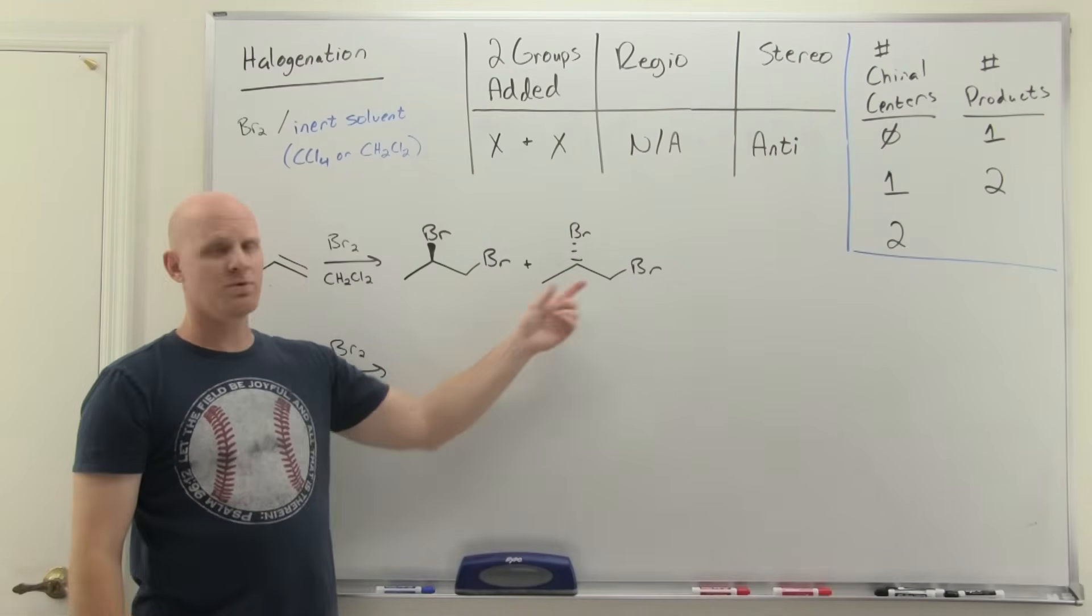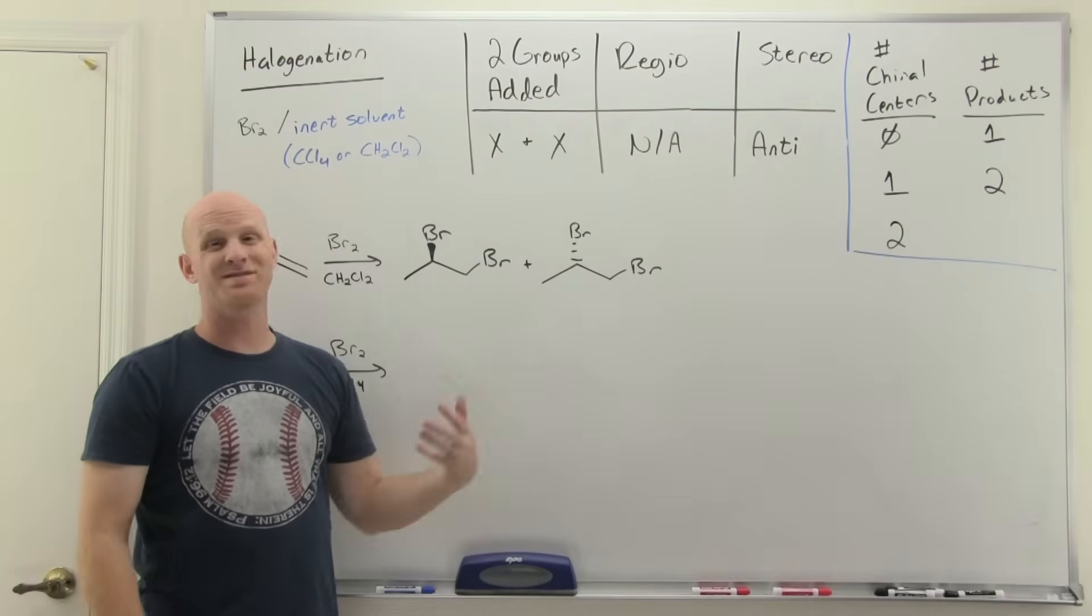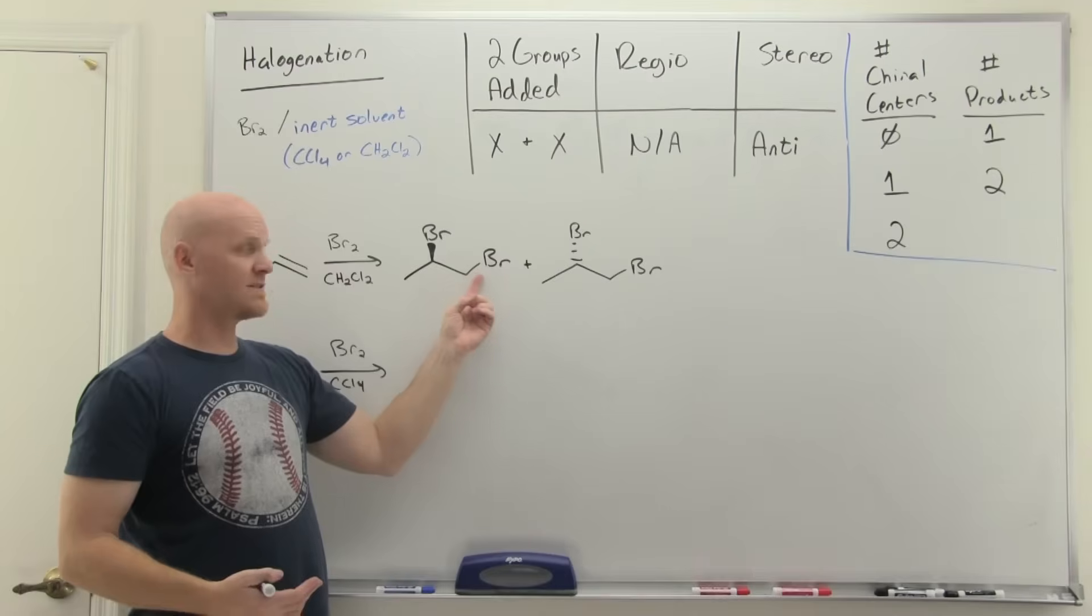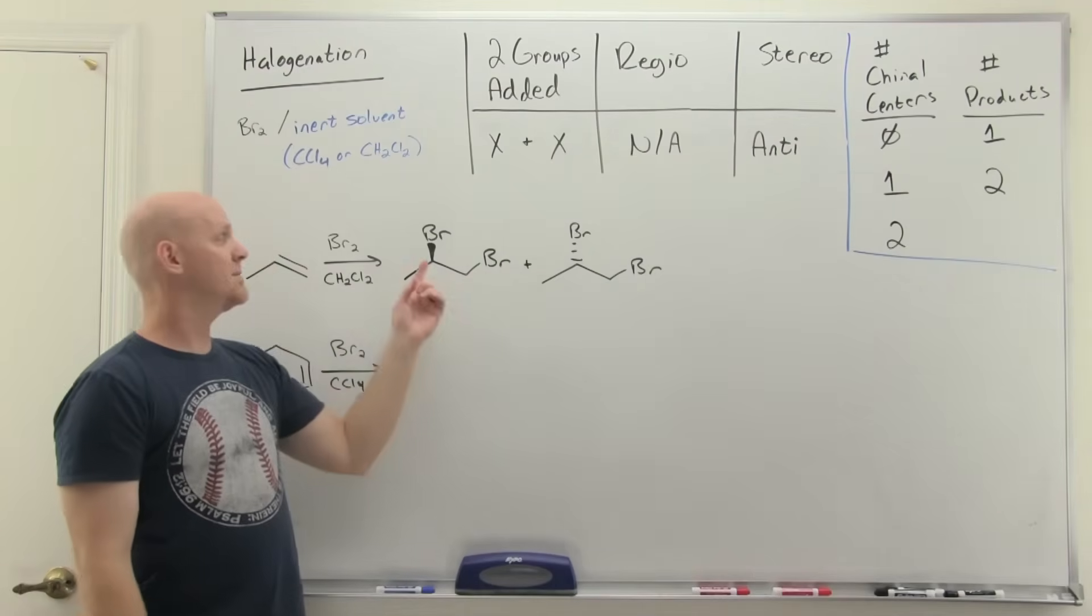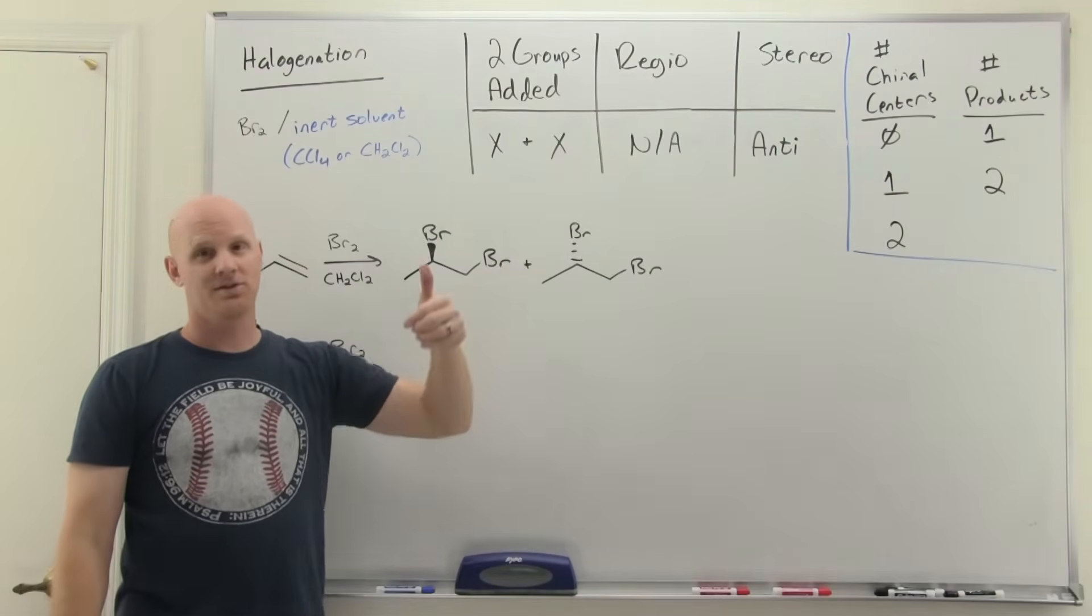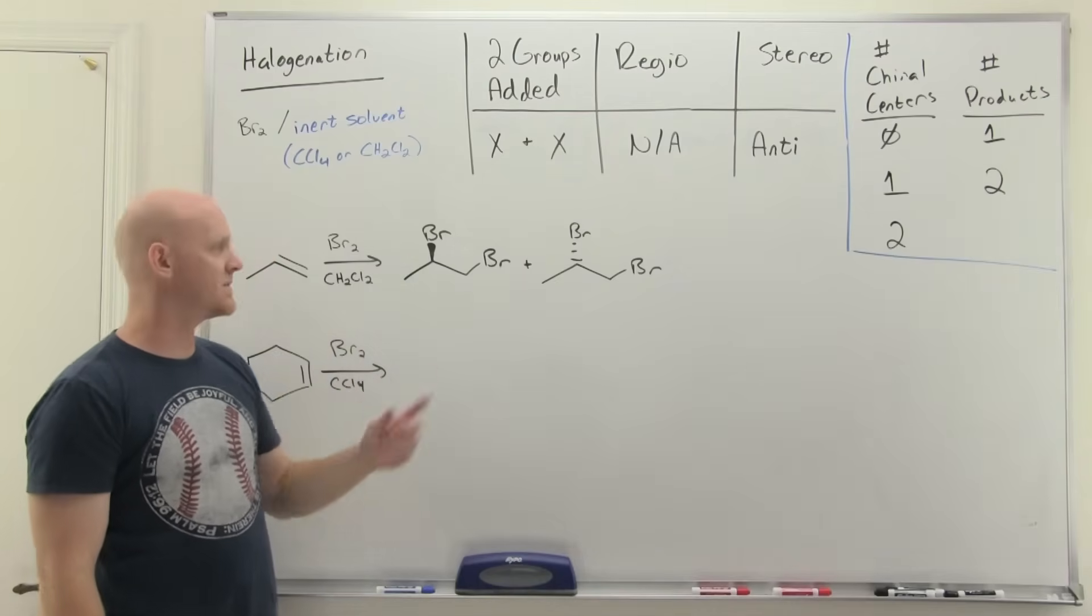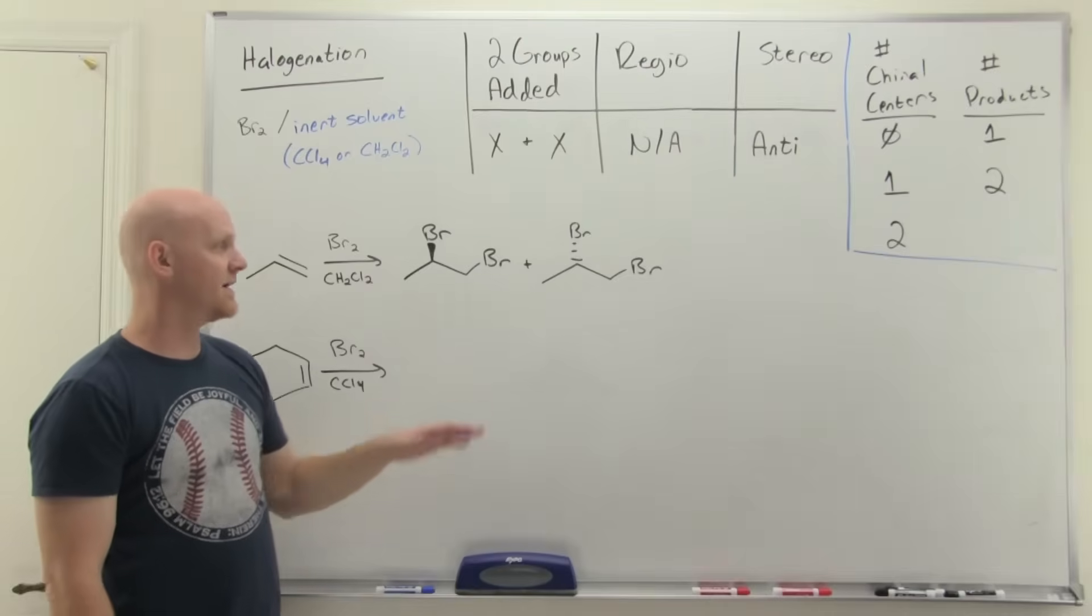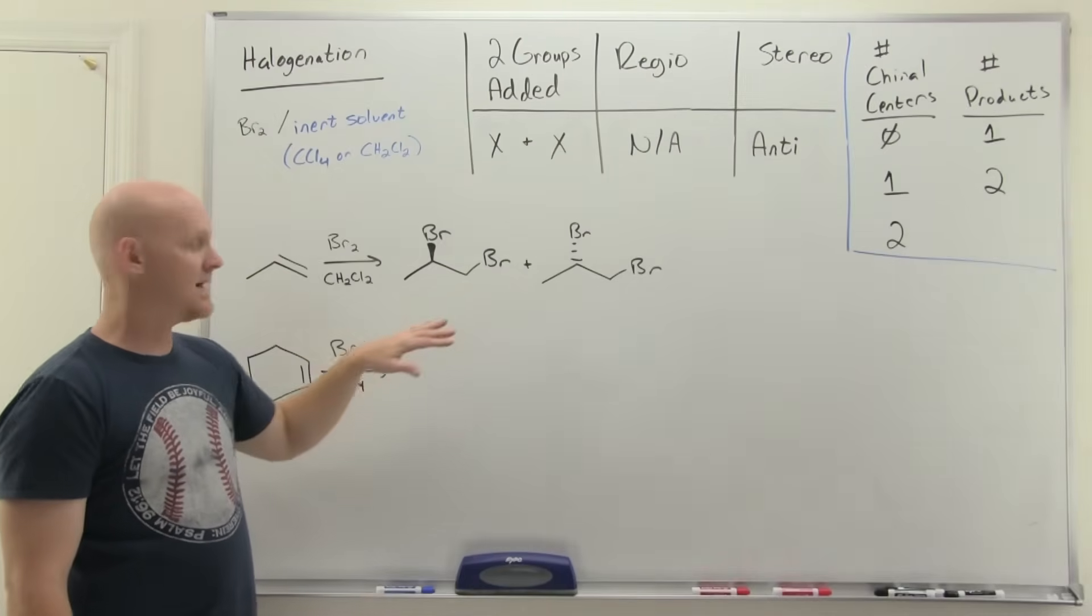You could get that version of the chiral center, or this version of the chiral center. A lot of students have asked me, Chad, why aren't you showing wedges or dashes here? Well, it's not a chiral center. It only can exist in one form, regardless of how you draw it. You could make this a wedge, a dash, or the bond in the plane. It's the same thing either way. But here, at a chiral center, it totally matters. It's a different stereoisomer depending on how you represent it.